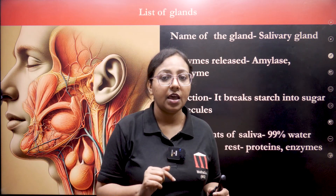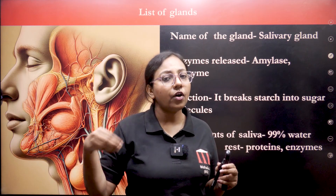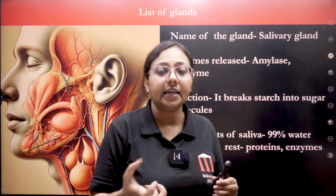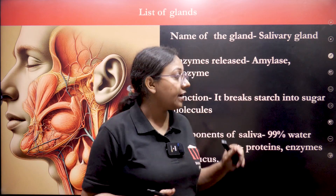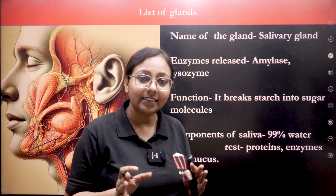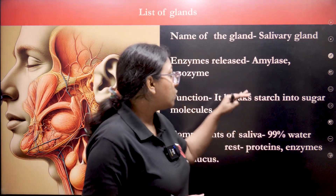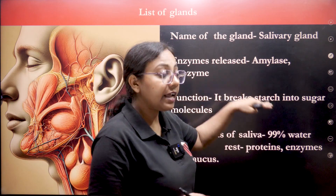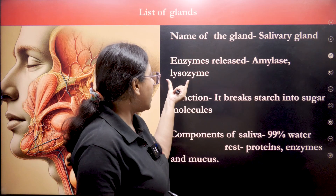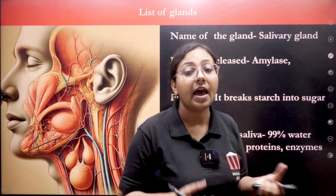Here is an example: when you eat chapati, which is a carbohydrate- or starch-rich food, and chew it for a long time, you start getting a sweet taste. That is because amylase starts acting on the starch and digests it. Digestion starts in your mouth — amylase plays a role in the digestion of starch, converting it into sugar molecules.